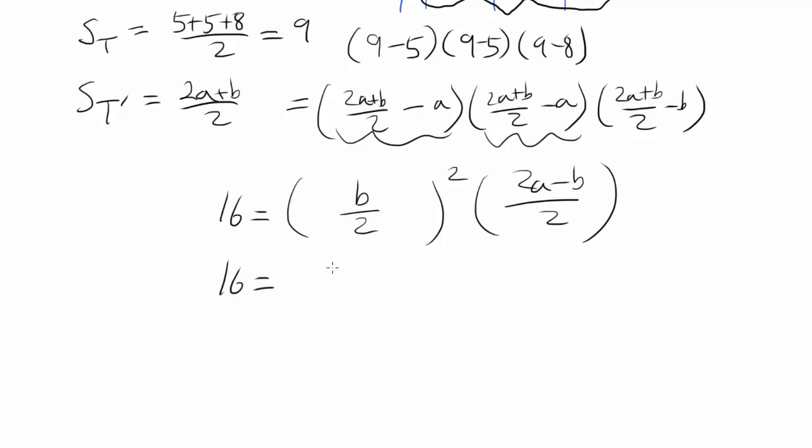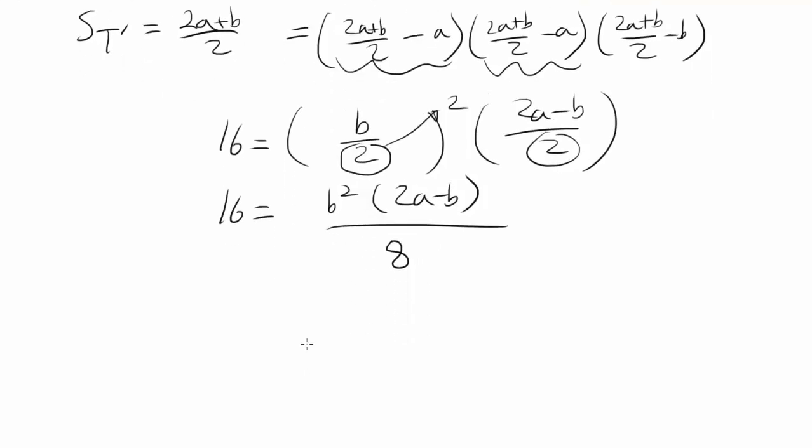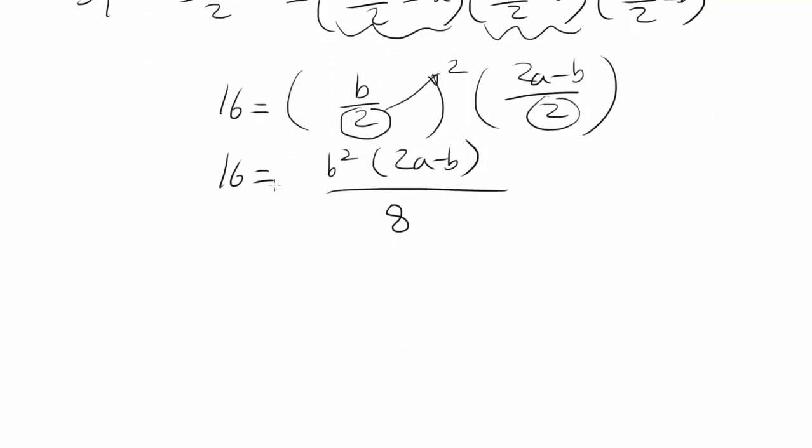What can we do now? Well, let's just expand it. B squared times 2A minus B all divided by 8. You have 4, 2 squared gets to 4 times 2 gets to 8 down below. And let's multiply both sides by 8. So you have 128 is 2AB squared. I'm expanding now, I'm distributing, I should say, minus B cubed.